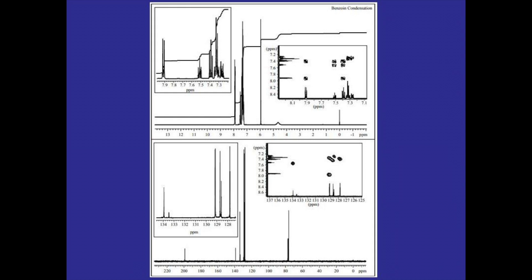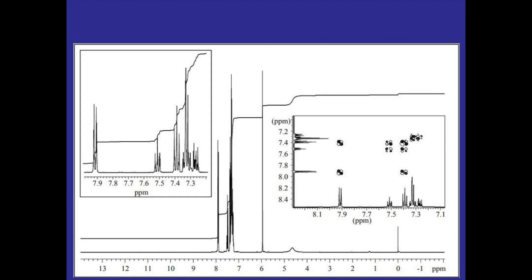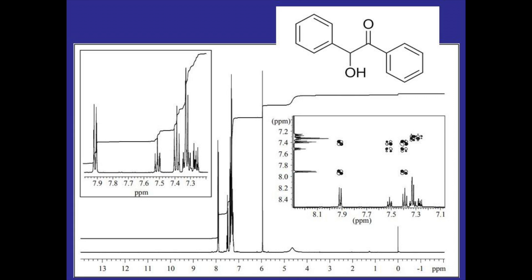Okay I'm going to go over a few things on this NMR. If we look at the HNMR we don't see any peak between 9 and 11 representing an aldehyde peak so this is going to be the benzoin product.